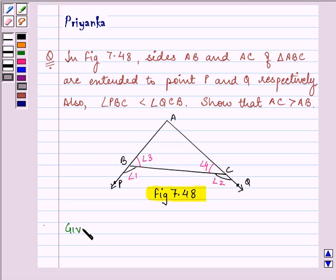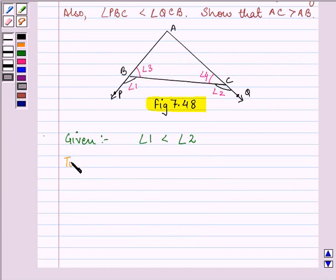So it is given to us in the question that angle 1 is less than angle 2. We need to prove that AC is greater than AB.